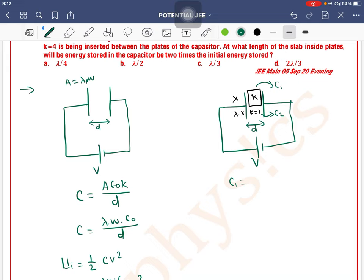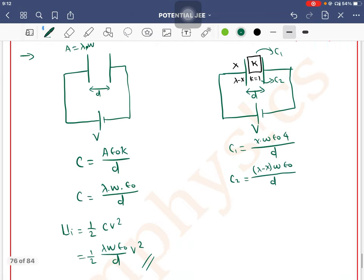C1 is x into W epsilon not times 4 divided by D. C2 is lambda minus x into W epsilon not times dielectric constant 1, divided by D.